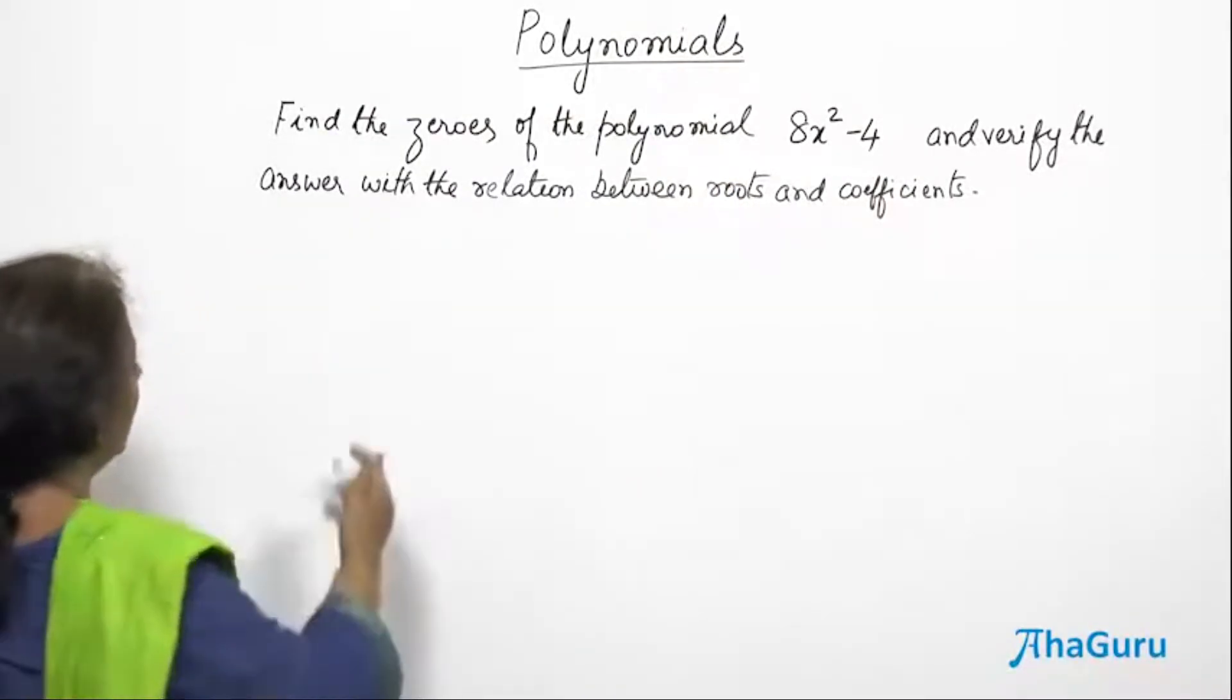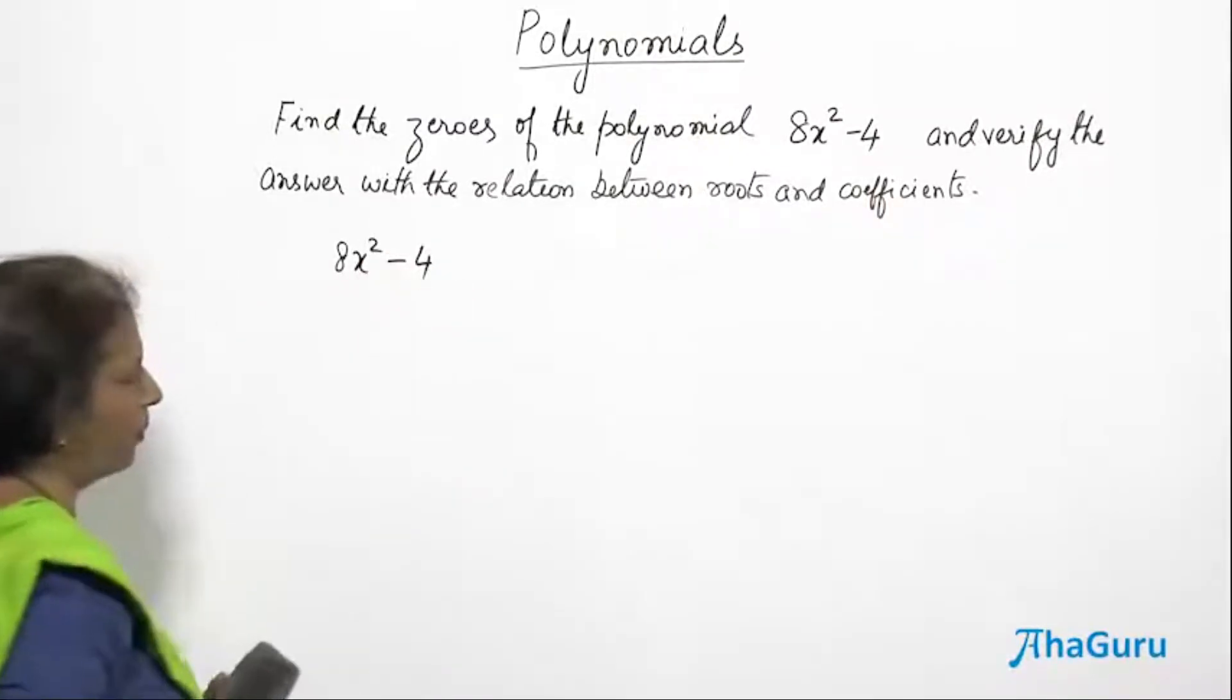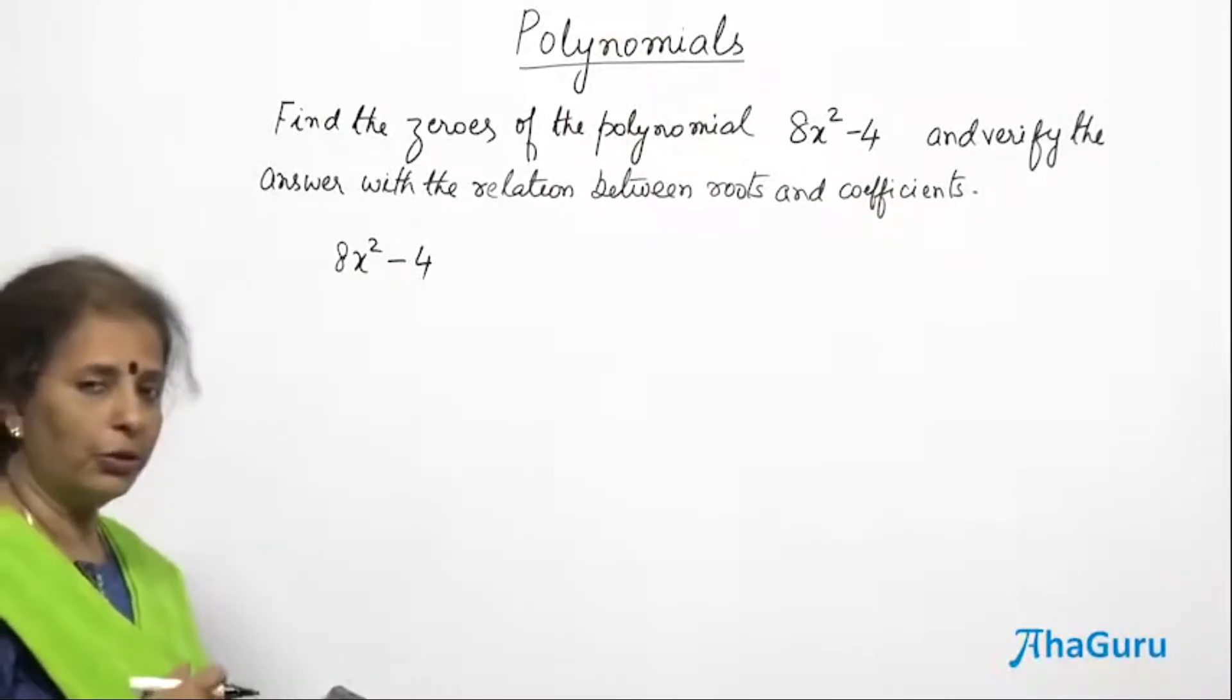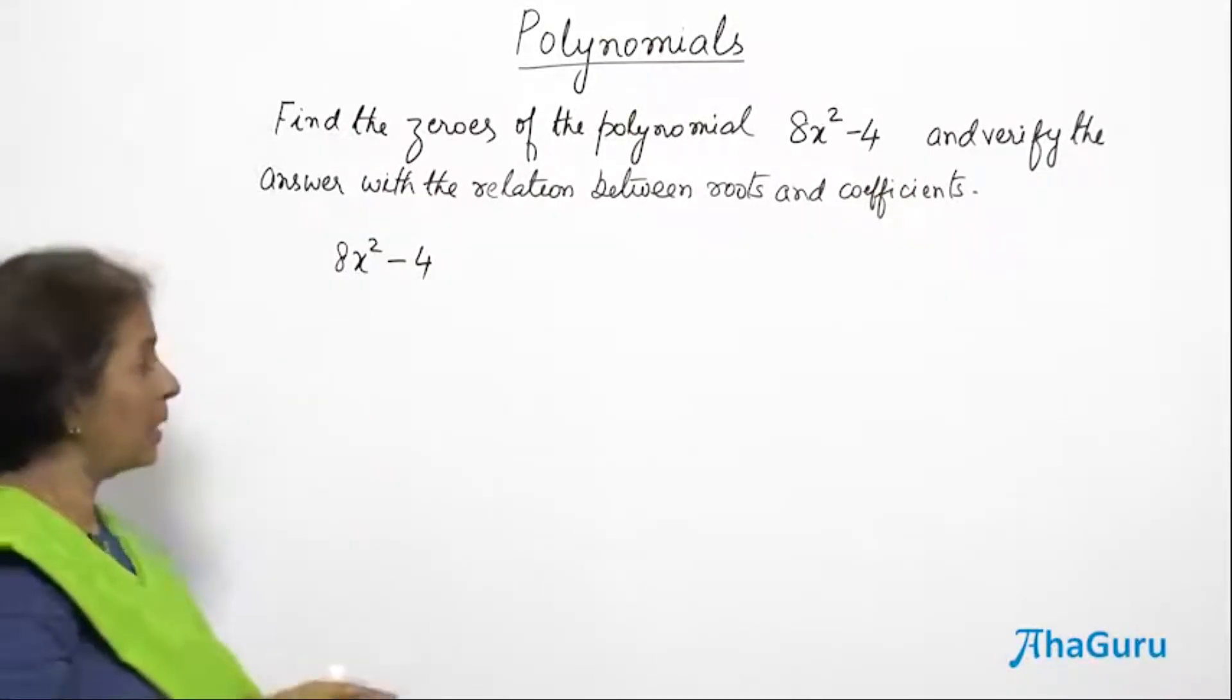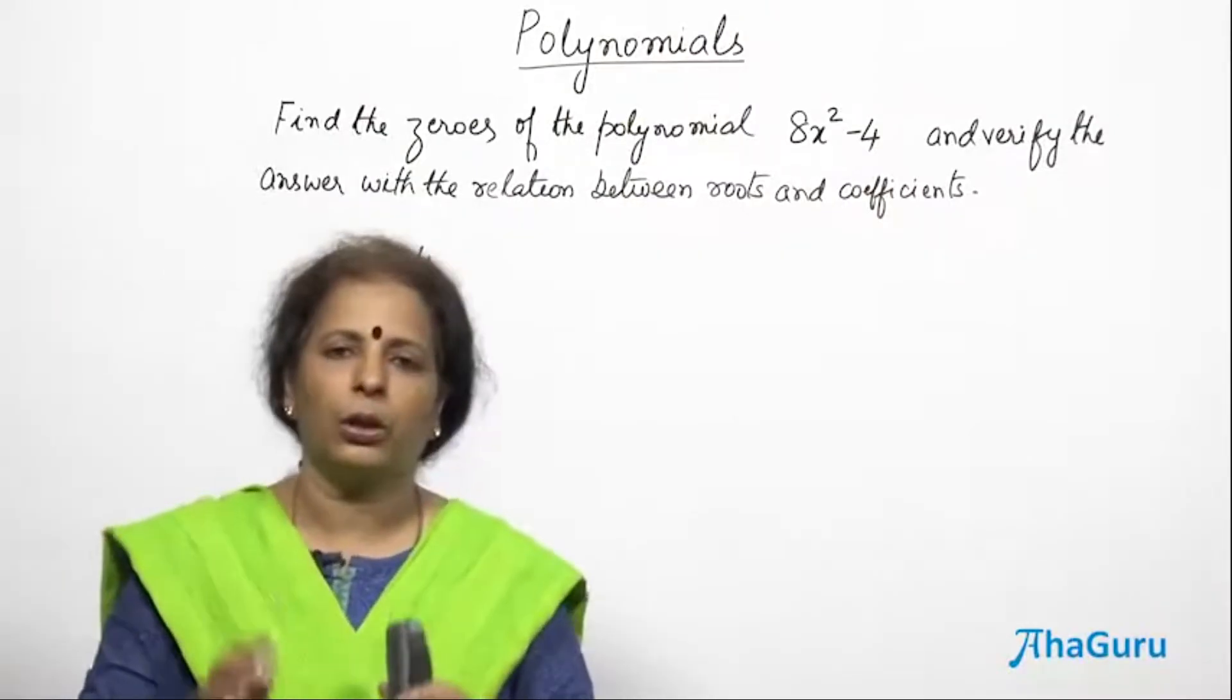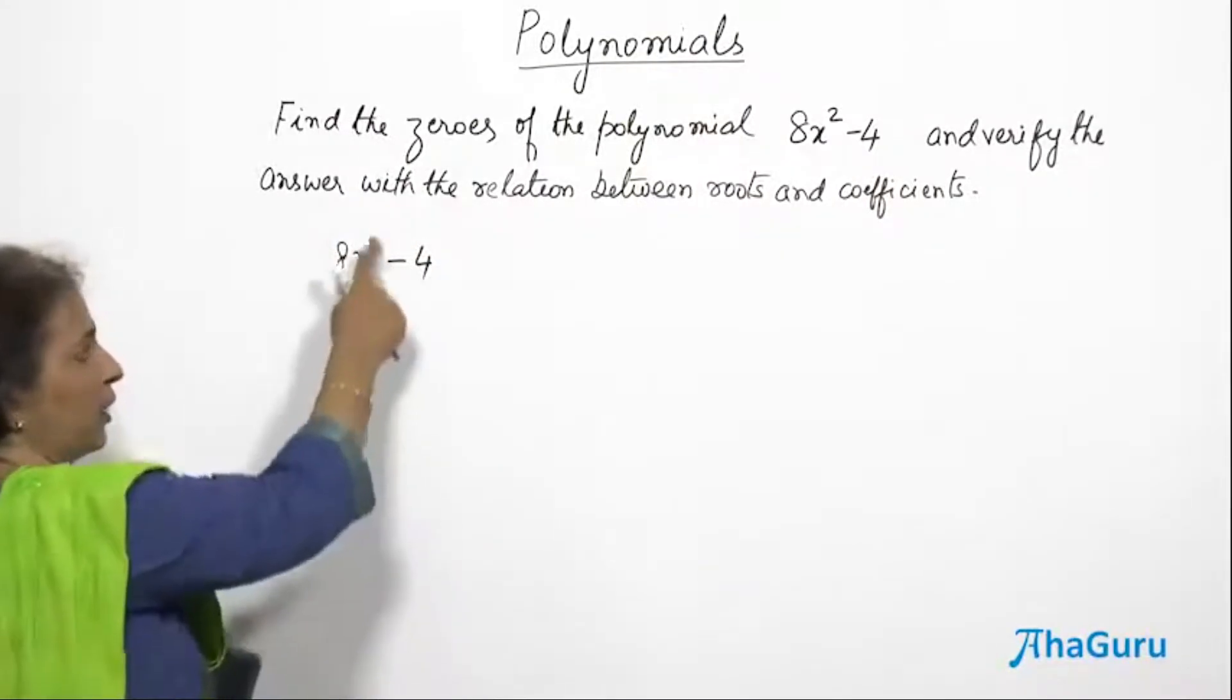Let us take this polynomial 8x² - 4. We know that it is a quadratic polynomial. Even though there is no x term here, the highest power remaining as 2 makes it quadratic. So it is not necessary that all quadratic polynomials should have all three terms. This term is more than enough.